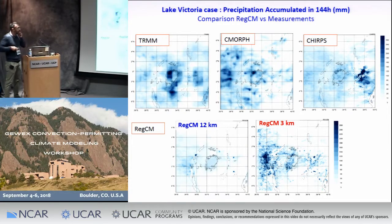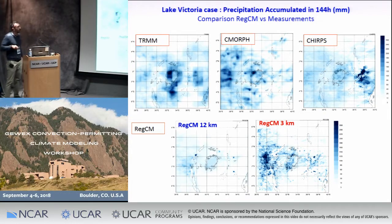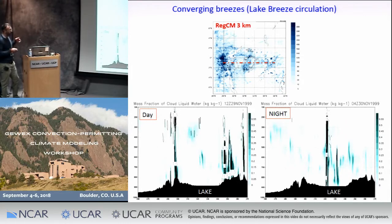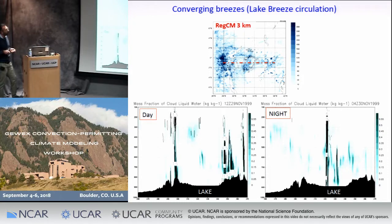On the bottom, we have the model results. The simulation at 12 kilometers, like the previous cases, underestimates the event. The convection-permitting simulation shows better results in terms of precipitation if compared with CMORPH, but obviously shows differences with respect to TRMM and CHIRPS. For this event, we also tried to understand if the model was able to reproduce the typical lake breeze circulation, characterized by intense precipitation and convection during the day over the mountain and during the night over the lake. Considering a cross-section, we analyzed the mass fraction of cloud liquid water shown in green shading and the vertical wind velocity in black contours. The model is able to reproduce convection over the mountain during the day and over the lake during the night.